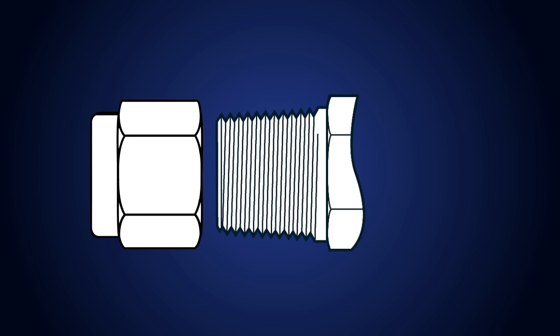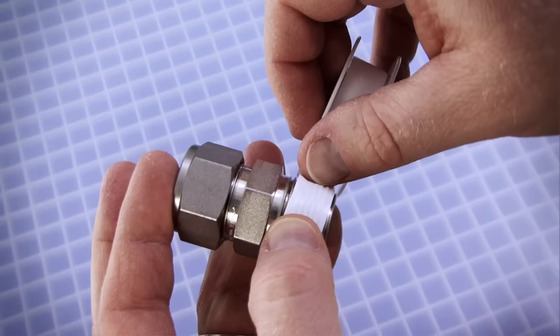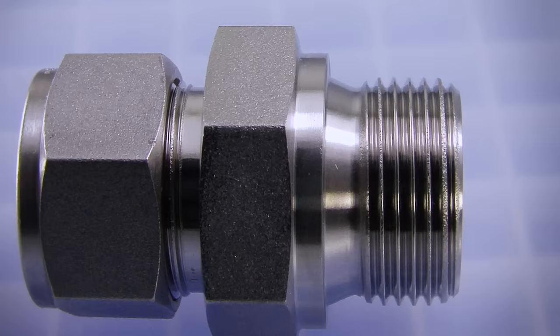Tapered threads, which may also be referred to as dynamic threads, are designed to seal as the flanks of the mating threads are drawn together. A thread sealant is required to fill in the gaps between the crests and roots to prevent system fluids from penetrating the connection.